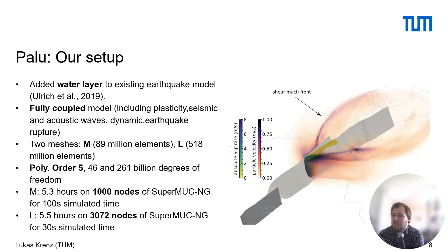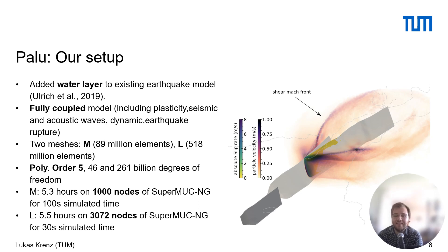For the Palo setup, a few more details. We added a water layer to an existing, already published and verified model by Ulrich and others in 2019. We used a fully coupled model including plasticity, the earthquake rupture, and wave propagation in both Earth and ocean — everything in 3D — and we also have wave propagation on the surface to model tsunamis. We created two meshes: a medium mesh M with 89 million elements and a large mesh L with 518 million elements.